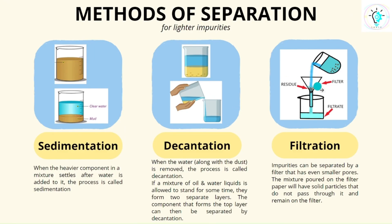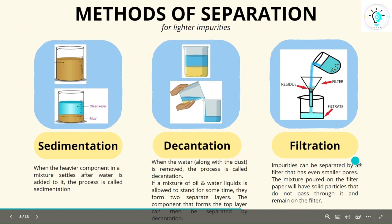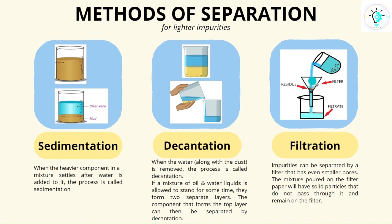We may also use the finer process of filtration, by using a filter paper with even smaller pores. The mixture is poured onto the filter paper and the solid particles do not pass through it. Only the filtrate passes through the filter paper and the residue is separated.